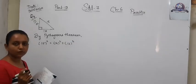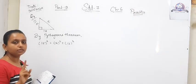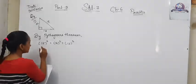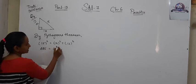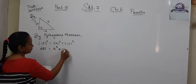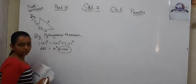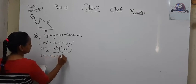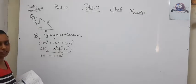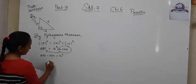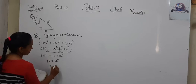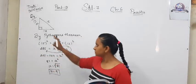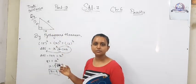Remember, X is what we need to find, and the hypotenuse always goes on the LHS. 15 squared is 225, so 225 equals X squared plus 144. Since 144 is positive on the RHS, it moves to the other side as negative: 225 minus 144 equals X squared. 225 minus 144 is 81, so X squared equals 81, and X equals square root of 81, which is 9.